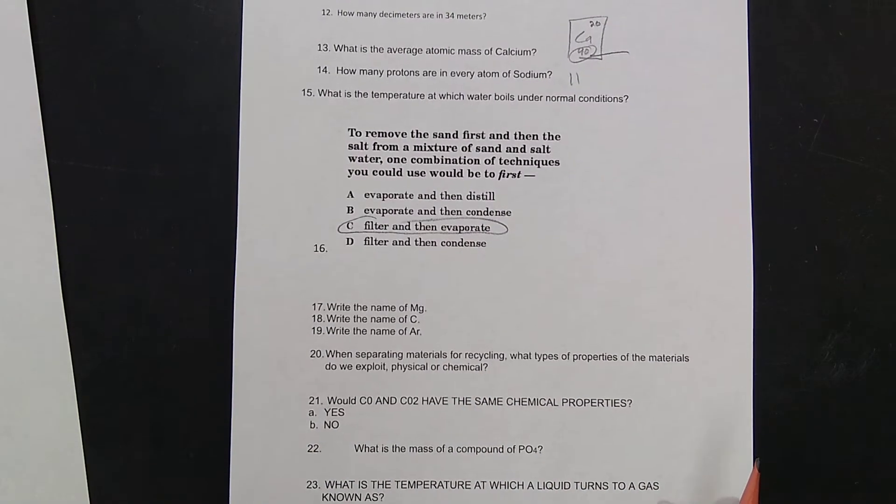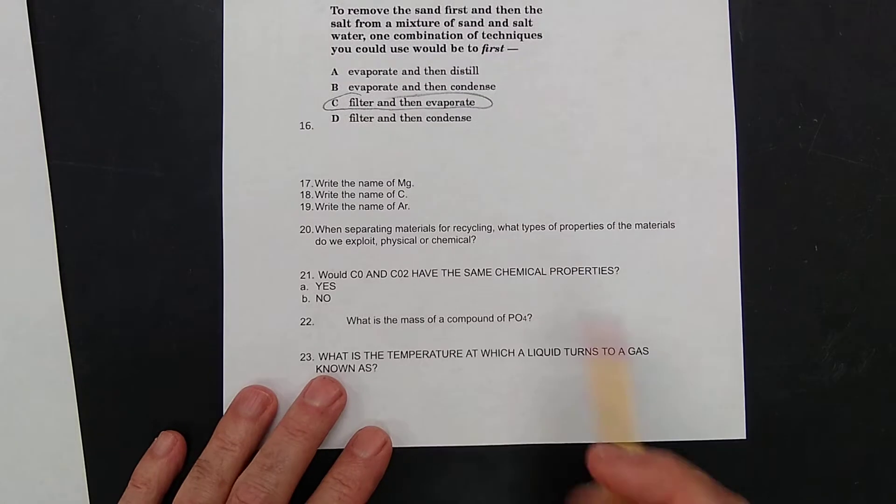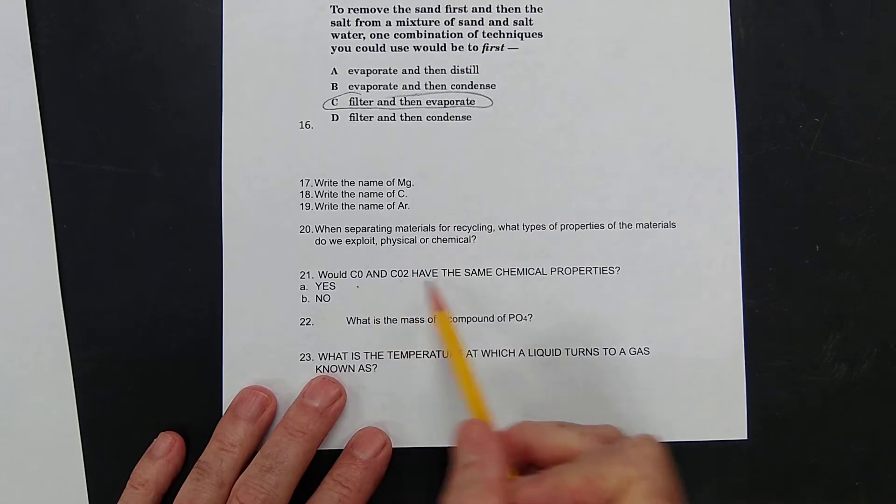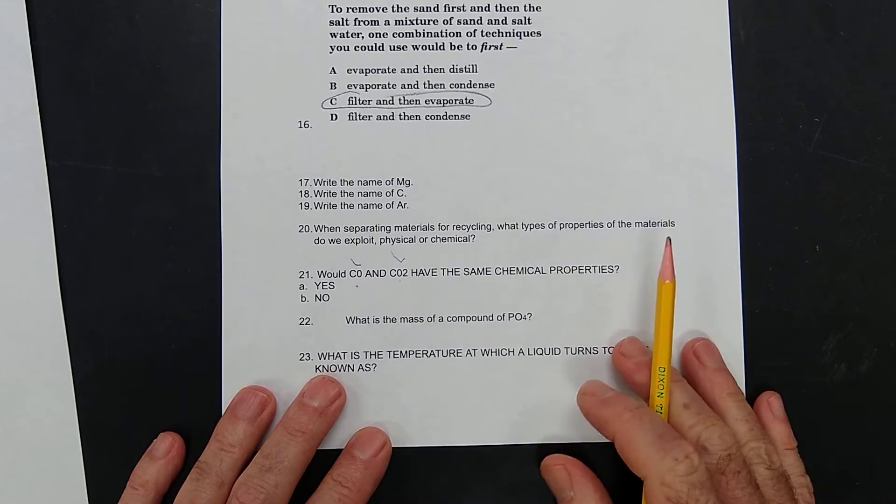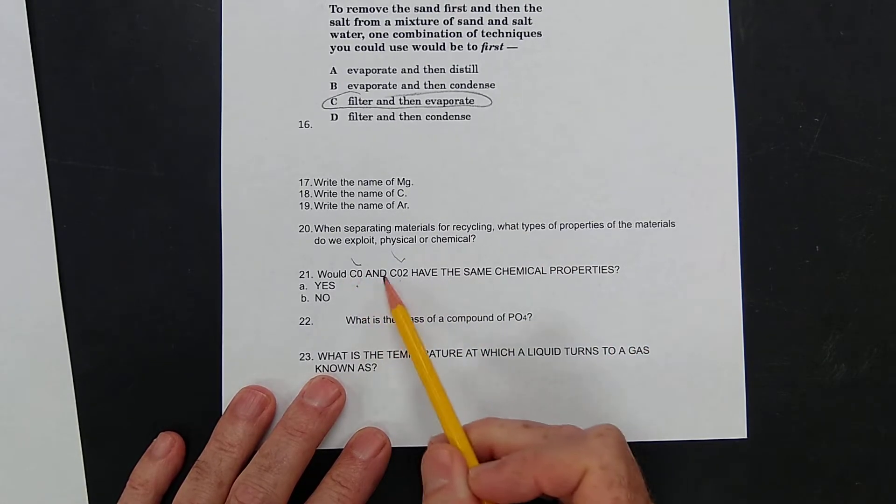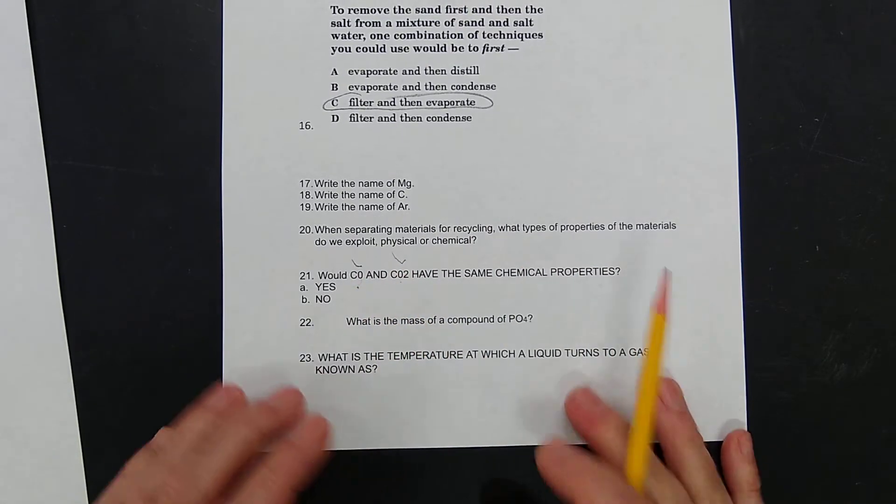The names of the elements. Would carbon monoxide and carbon dioxide be the same? No. Every compound is different. I mean, this is poisonous, and this one comes out of your mouth every time you breathe.